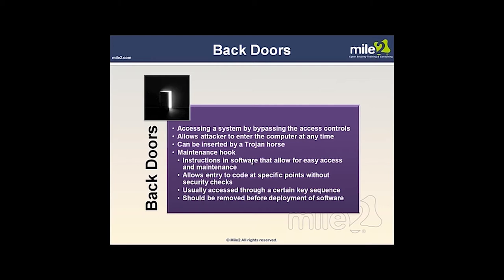Backdoors — when I think of Trojan horse programs, I think of a backdoor. Rootkits are related but go much deeper into your system and most likely require a reinstall. With Trojan horse programs, you don't know when you download that software that it came with one — but it most likely did if it's illegal software you were supposed to pay for. Programmers would put maintenance hooks in software intentionally to allow entry to code at specific points without security checks — but these were supposed to be removed before the software gets sold.